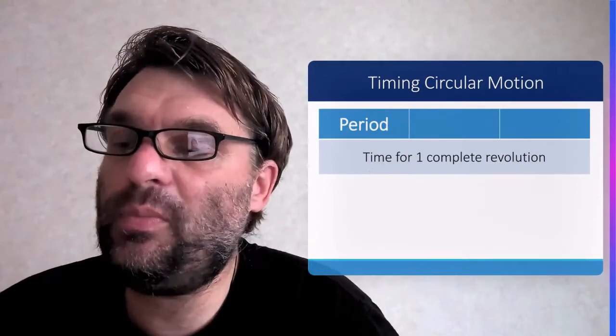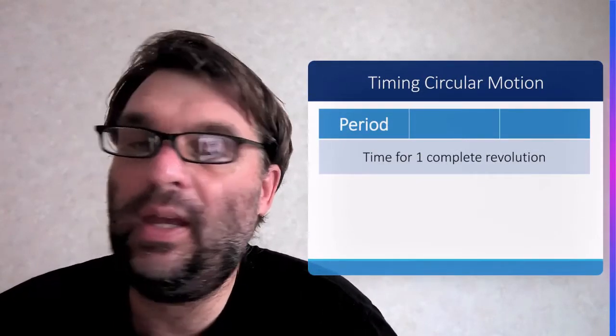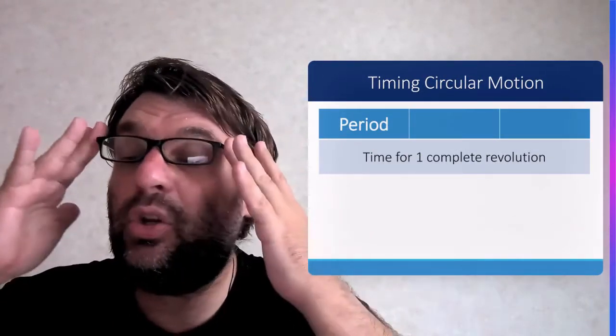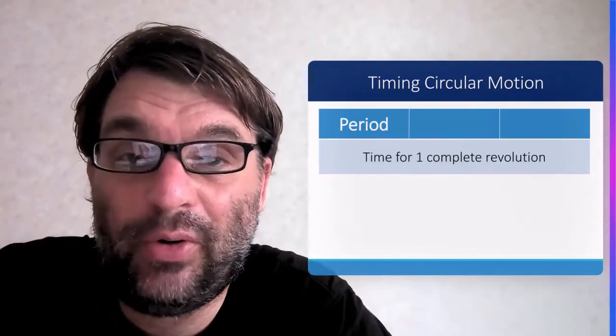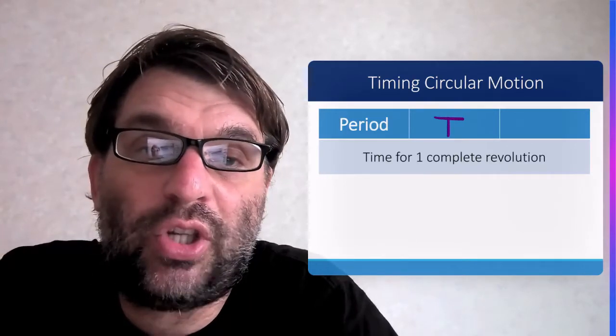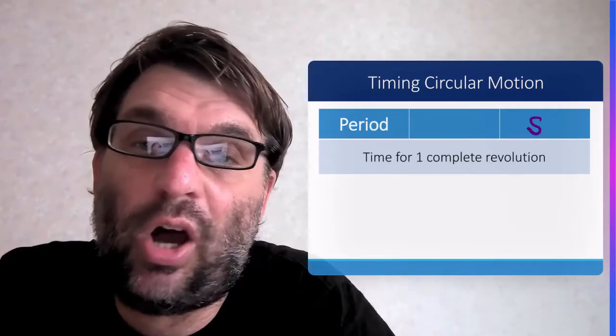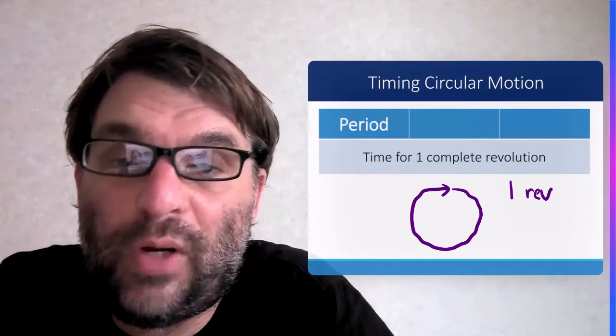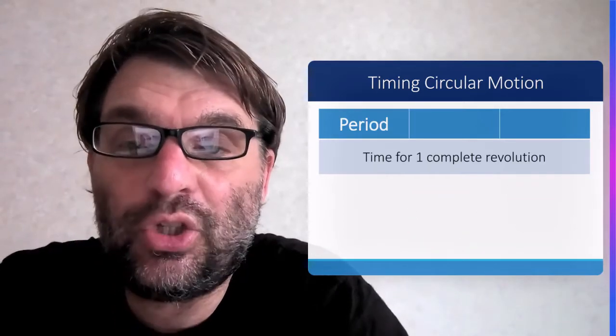In terms of timing circular motion, you need to have the concept of the period, which has a symbol of capital T and the units of seconds. It's basically the time for one complete revolution of a circle.